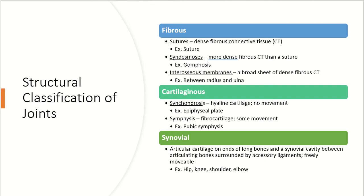We also have interosseous membranes as a potential fibrous joint — basically a broad sheet of dense fibrous connective tissue found between the radius and ulna and the tibia and fibula. The next structural classification is cartilaginous joints. We have synchondroses, which have hyaline cartilage and allow no movement — epiphyseal plates are an example. We also have a symphysis, made of fibrocartilage that allows some movement, like the pubic symphysis between the two pelvic bones, which allows widening during pregnancy and childbirth.